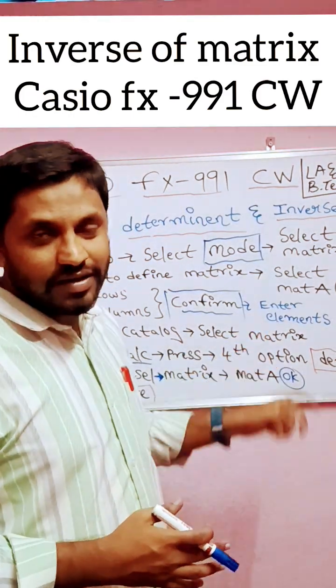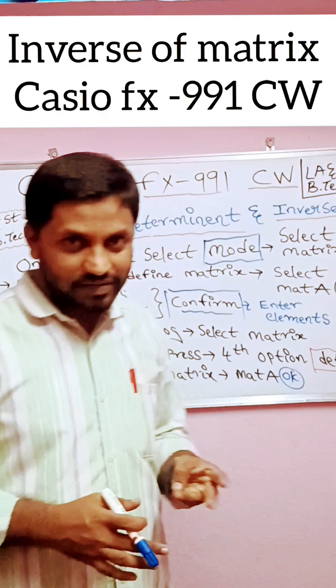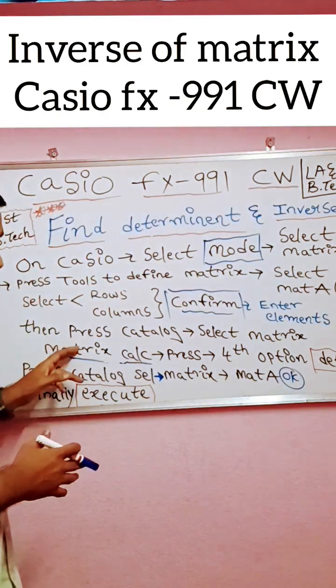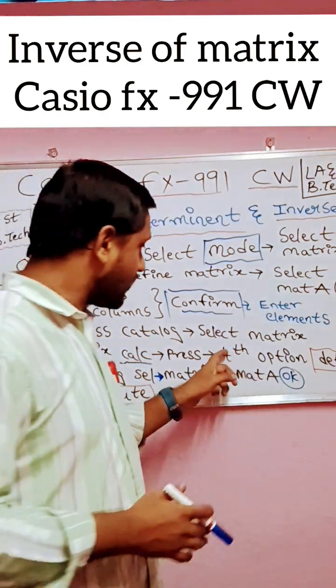Enter the elements, either two by two or three by three matrix. Then press Catalog, again select matrix option. You'll get matrix calculation as first option.